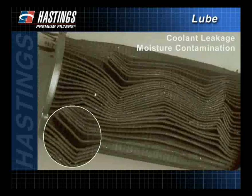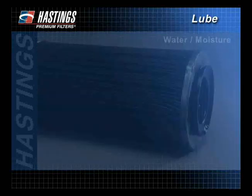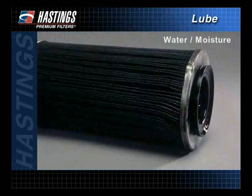Coolant leakage or moisture contamination will cause wavy pleats in the media and deterioration of the wrap. It may also cause a sticky, shiny, tightly held sludge on the filter media. A deteriorated outer wrap is another sign of moisture. Certain oil additives will trap water and cause a gel-like coating on the filter media — it may appear clean, but when tested, will show a restriction if moisture is still present.